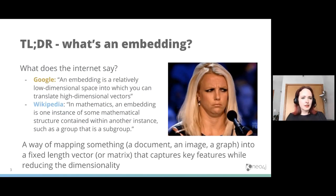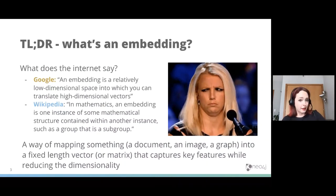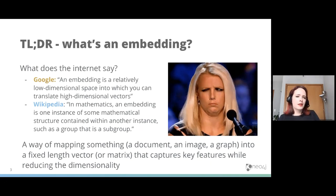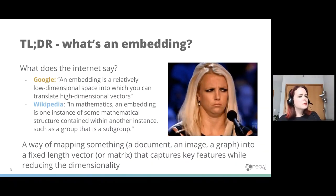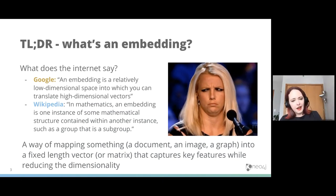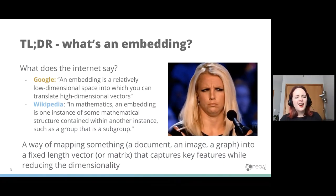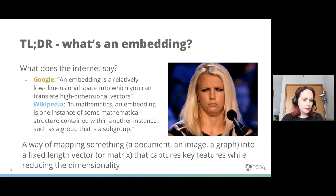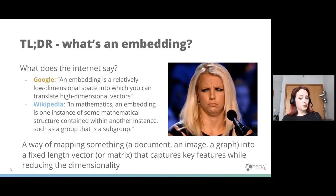So what on earth is an embedding? This is something I honestly struggled with when I first started in this space. If you Google it, you get confusing and opaque answers — Google says it's a low-dimensional space where you can translate high-dimensional vectors. That doesn't help. Wikipedia is worse: it's an instance of some mathematical structure contained in another. The way I think of it is: an embedding is just a way of mapping something complicated — a document, an image, a graph — into something simple: a fixed-length vector that captures the key features while reducing dimensionality.